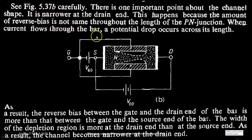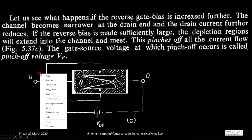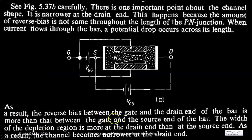See figure 5.37B very carefully. There is one important point about the channel shape — it is narrower at the drain end. This happens because the amount of reverse bias is not the same throughout the length of the PN junction. When current flows through the bar, a potential drop occurs across its length. As a result, the reverse bias between the gate and the drain end of the bar is more than that between the gate and the source end. So the width of the depletion region is more at the drain end than at the source end, and as a result, the channel becomes narrower at the drain end.